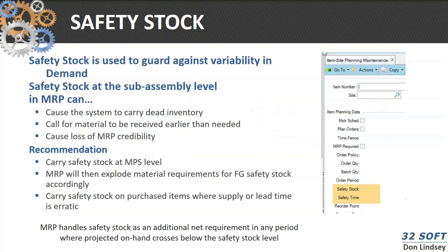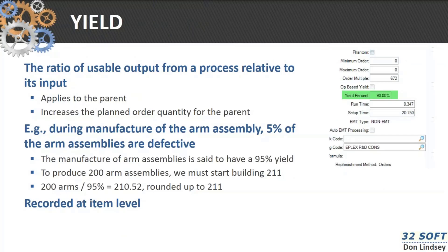Safety stock, which we talked about last week, is used to guard against demand uncertainty. The recommendation for safety stock in an MRP environment is to use it at the highest levels or the lowest levels of the bill of material. If you use safety stock at the intermediate levels of bills of material, you can cause QAD to carry dead inventory and cause MRP to expedite when it's not needed. That unnecessary expediting tends to lose credibility in MRP, and then you fall back on spreadsheets, which is never a good idea.